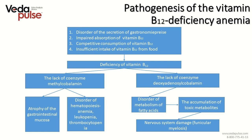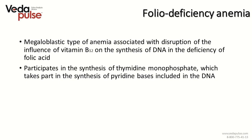Folic acid deficiency anemia also leads to megaloblastic type of anemia, associated with disruption of the influence of vitamin B12 on DNA synthesis in the deficiency of folic acid. Megaloblastic erythrocytes are identified as defective by immune cells in the spleen, which damage them, thus shortening their lifespan. Two main things to know about folic acid: it is a water-soluble and thermolabile vitamin — meaning it gets destroyed in thermal treatment, so products containing it should be taken raw.